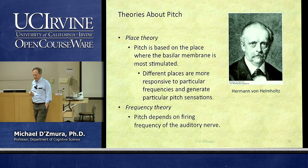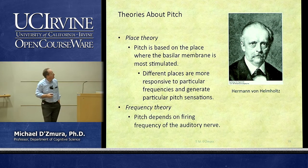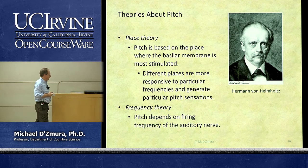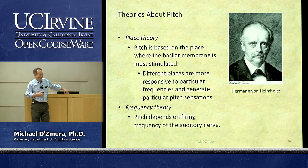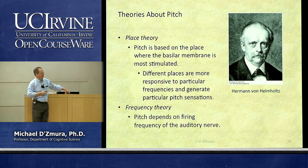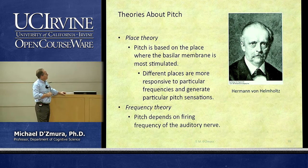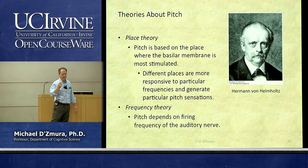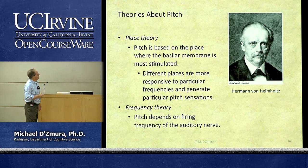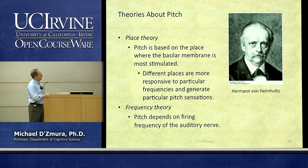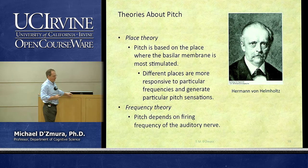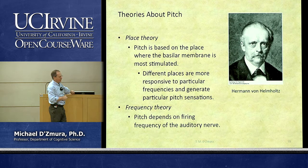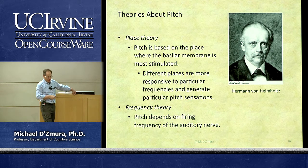We want to know how pitch is coded by the auditory system. People have come up with two primary explanations. The first is known as place theory, proposed by Hermann von Helmholtz, a famous German physicist. He stated that pitch depends on the place along the length of the basilar membrane where we find the greatest vibrations — the stimulation of greatest amplitude. Different places along the basilar membrane are more responsive to particular frequencies of sound vibration, and these different places, when stimulated, generate particular pitch sensations.